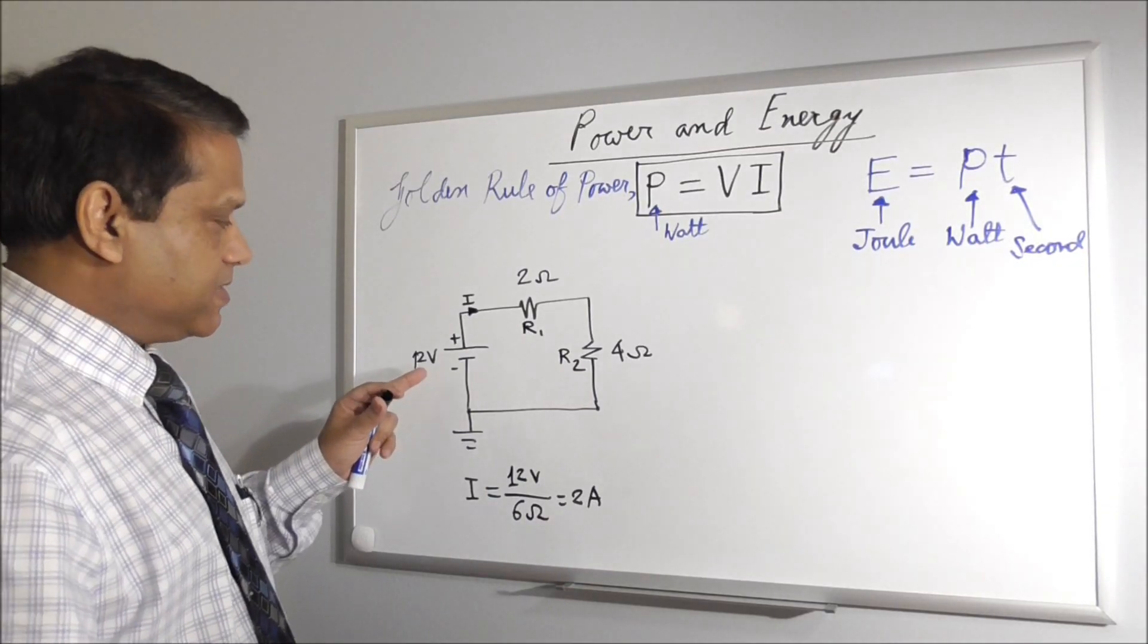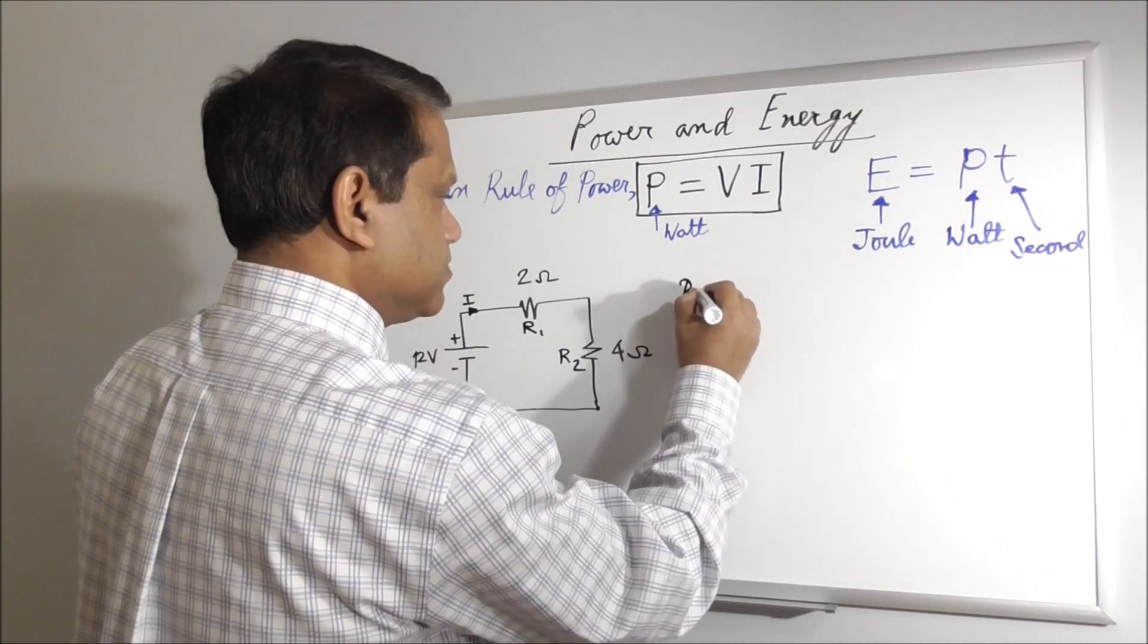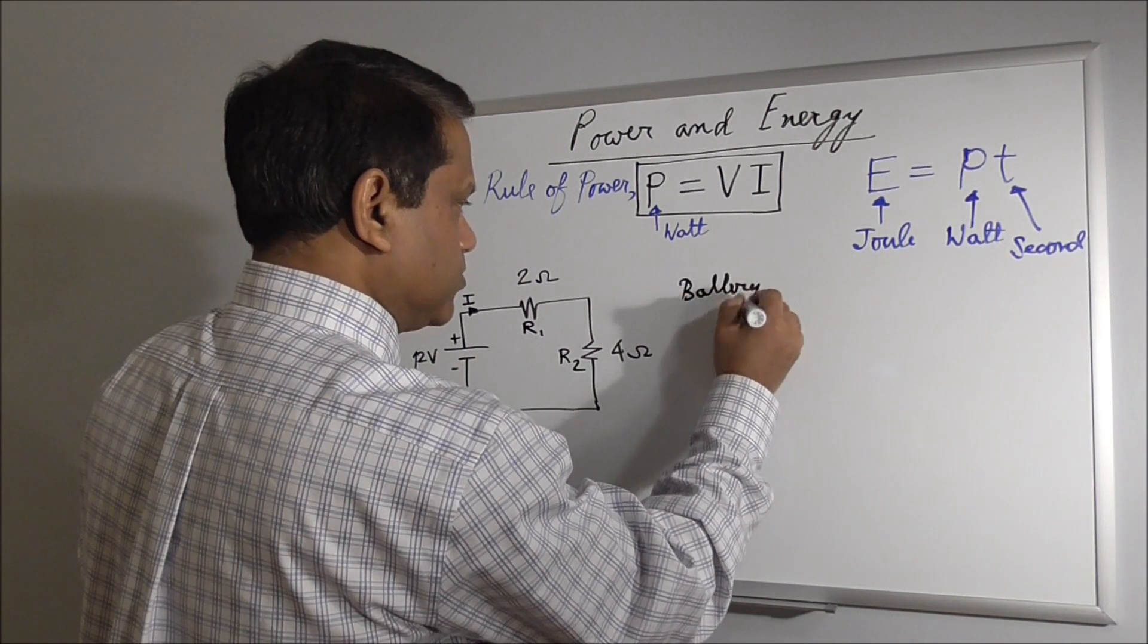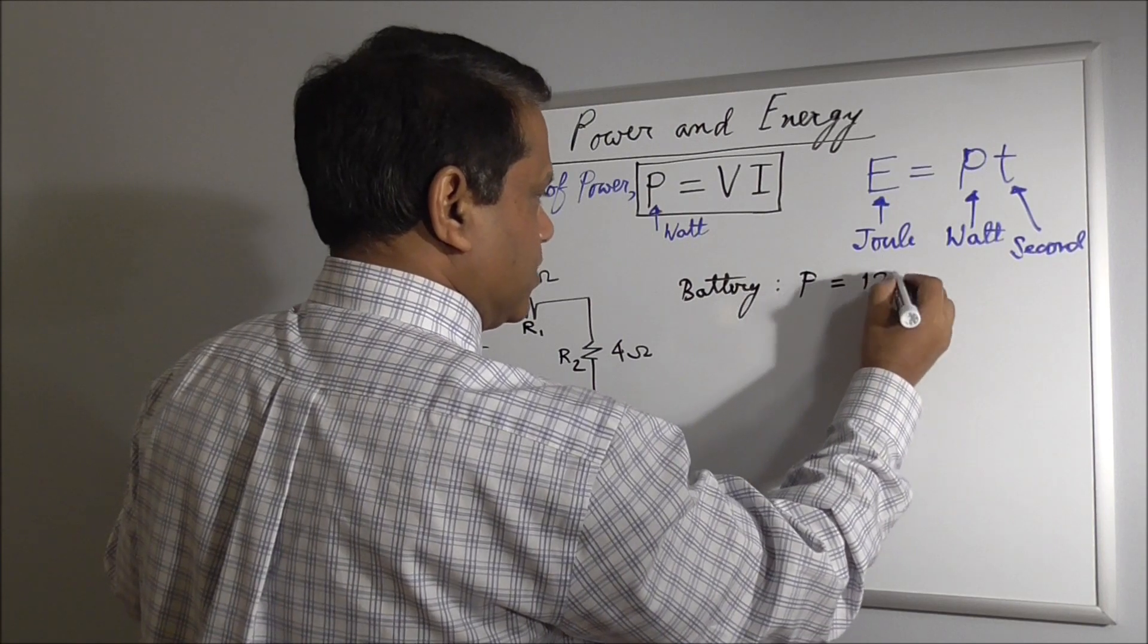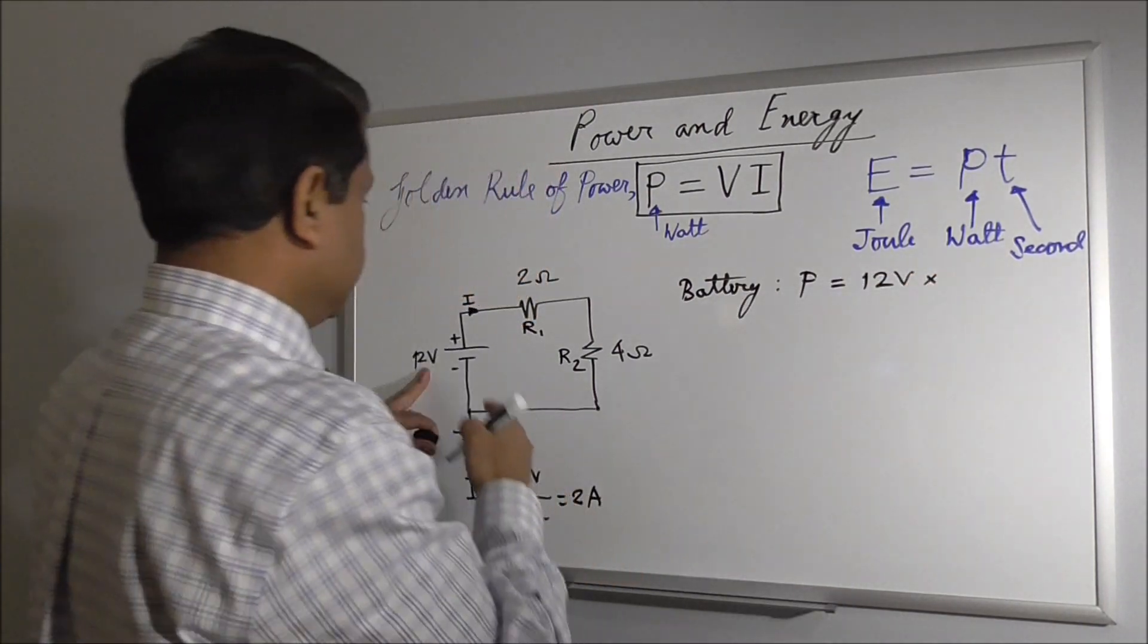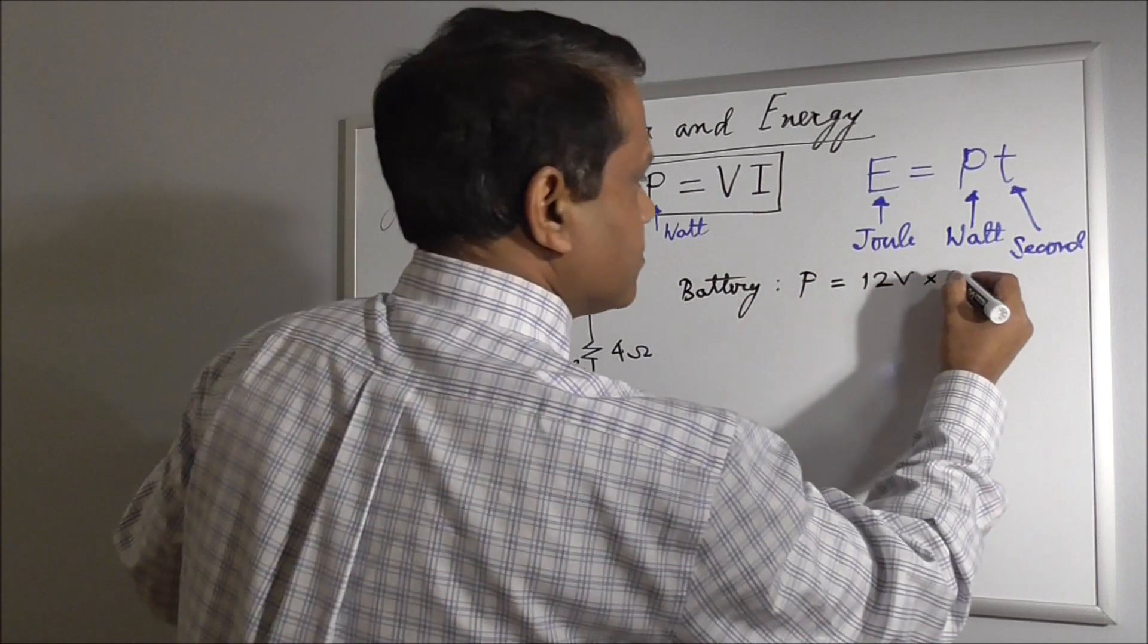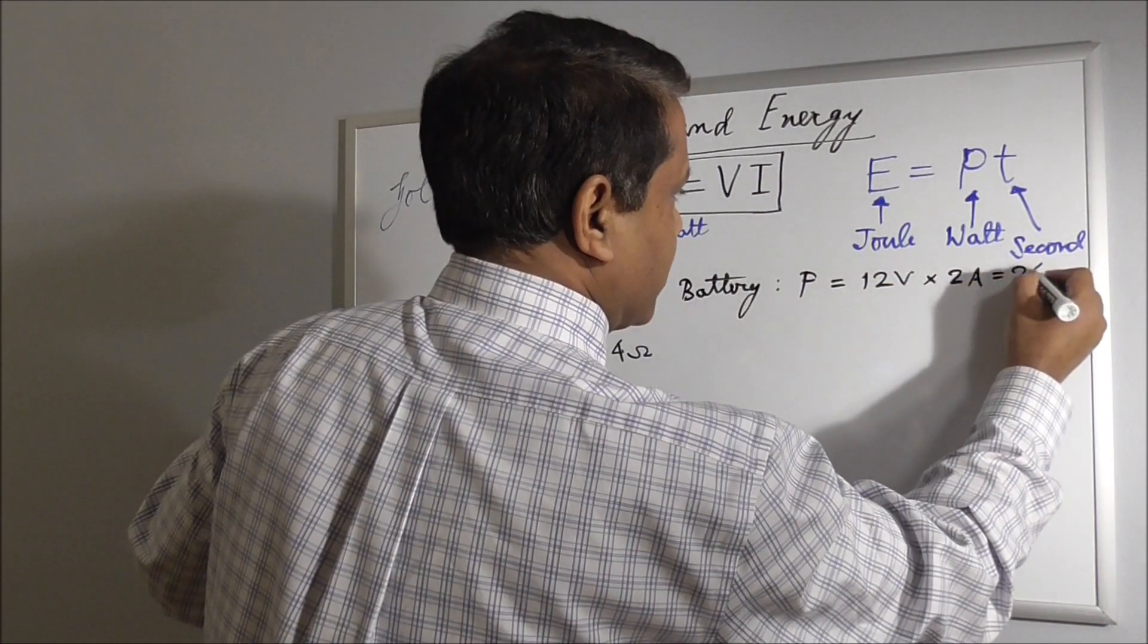How much power is this battery giving away? P equals VI. Power V times I, that is 12 volt times 2 ampere, 24 watt.